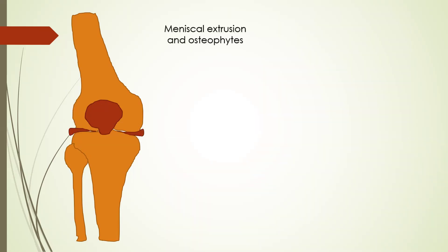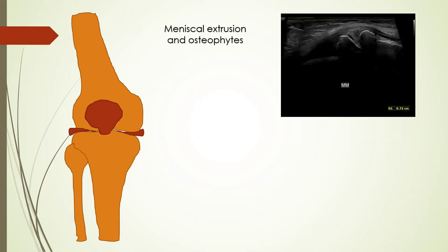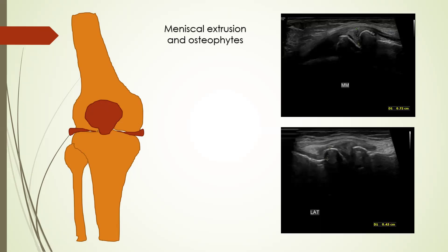Next is meniscal extrusion and osteophytes, which are indicators of degenerative joint disease or osteoarthritis, which very commonly affects the knee joint. We can see large osteophytes along the articular surface and meniscal extrusion, which are indirect indicators of loss of joint space.